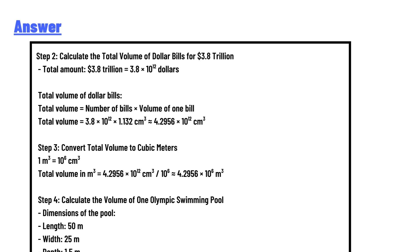Step 4: Calculate the volume of one Olympic swimming pool. Dimensions of the pool: length 50 meters, width 25 meters, depth 1.5 meters. Volume of one Olympic pool equals 50 multiplied by 25 multiplied by 1.5, which equals 1875 cubic meters.